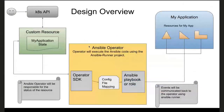Green represents the user-defined stuff and blue is what the operator is managing. Going back to the design overview with a bit more detail: the Ansible operator is actually writing back to the custom resource status based on what we've determined from Ansible Runner. We can also see that events are coming back from the Ansible playbook or role back into the Ansible operator.